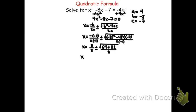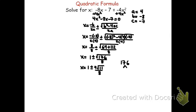Simplifying further: 8 divided by 8 is 1, and 64 plus 112 is 176, so we have x equals 1 plus or minus the square root of 176, over 8. The square root of 176 is not a perfect square, so using a factor tree: 176 equals 16 times 11, and 16 is 4 squared. So the square root of 176 can be written as 4 root 11 — since the square root of 4 squared is 4, leaving root 11. Rewriting: x equals 1 plus or minus 4 root 11 over 8.